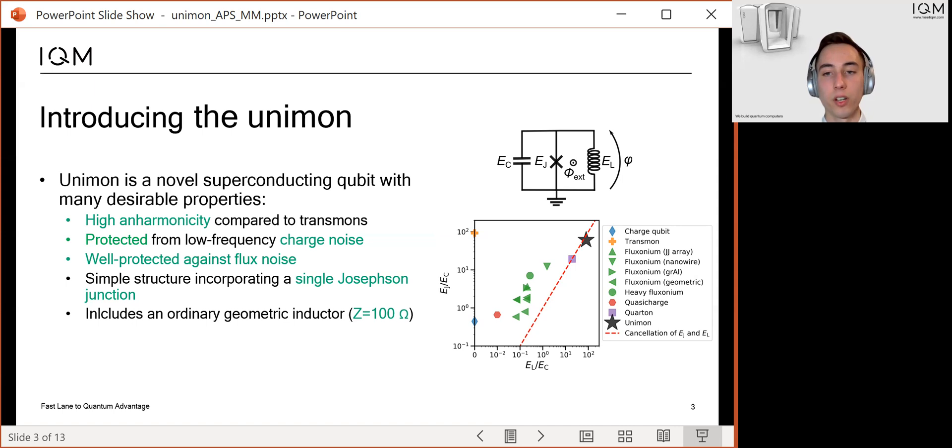In the figure, transmons are located on the y-axis since their inductive energy is zero. The green fluxoniums have a small inductive energy due to their large superinductance. The Unimon is depicted with a black star. The Unimon is in an unexplored parameter regime where the inductance is small and the inductive energy is as large as the Josephson energy.